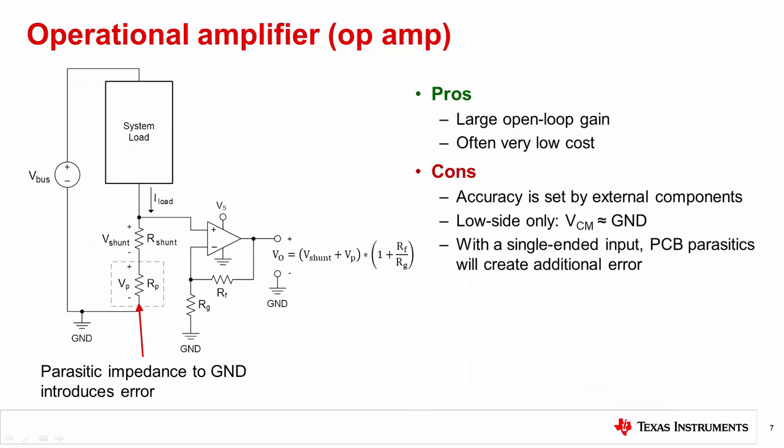Op amps offer the most basic implementation and typically are used in lower accuracy, low cost applications. However, the cost savings are offset if high accuracy external components are used to increase precision. Because the common mode voltage of an op amp is limited to its supply voltage, these are best suited for low side measurements.